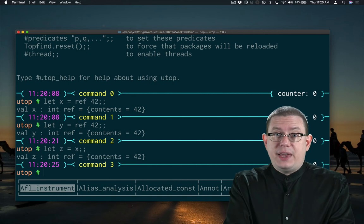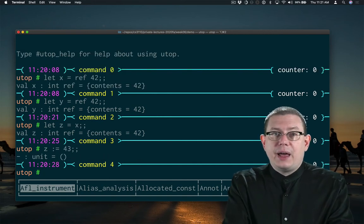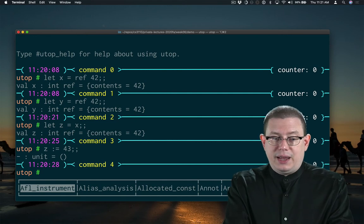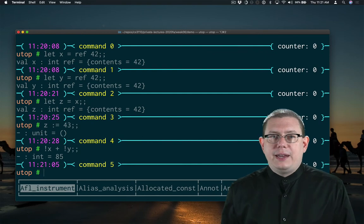Now I can update z or x, either one. And by doing that, I have updated x since it's an alias. I get 85 back, not 84 as I would have originally.